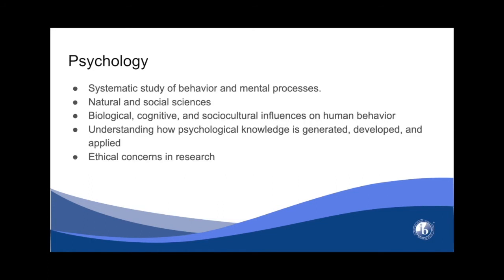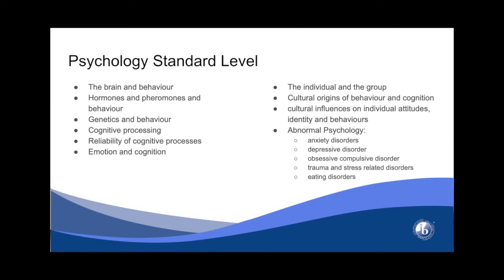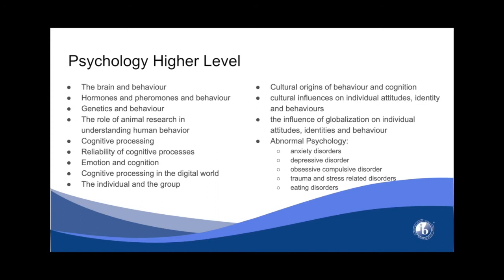Your last option, psychology, is looking at human behavior. It's going to be a combination of natural and social sciences, so there is going to be some biology. It's going to look at ethics, specifically things like research and how ethics play a part in psychological research. This is the standard level course outline, and then the higher level course outline has more content. These courses are taught together, meaning that the SL students will be learning the HL material as well.